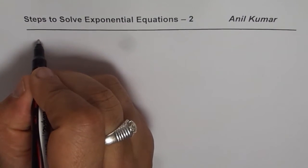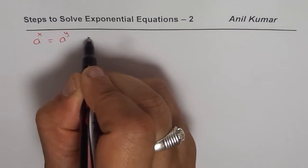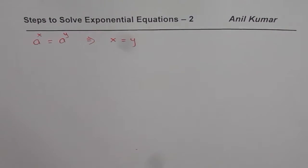In part 1, we learned that if a to the power of x is equal to a to the power of y, it basically means that x should be equal to y. So that is the strategy we have applied to solve exponential equations.